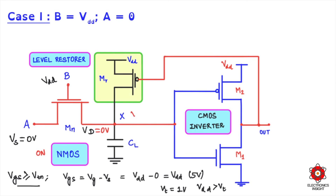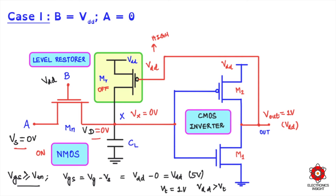So now the voltage at node X is zero volts. When zero volts is given as input to the inverter — which is simply a NOT gate — the output VOUT equals VDD (a high voltage). This VDD is passed to the gate terminal of the PMOS. Since PMOS turns on only for a low gate voltage, this PMOS transistor connected in feedback will not turn on and will remain off. There is also no need for the level restorer circuit in this case, because the strong zero has already passed correctly from source to drain.